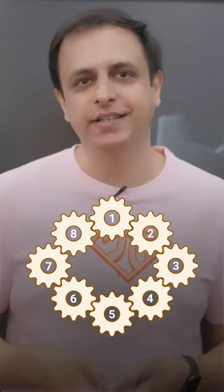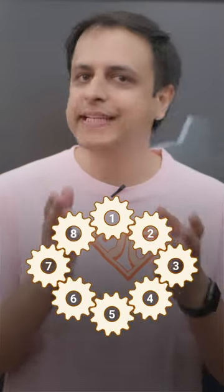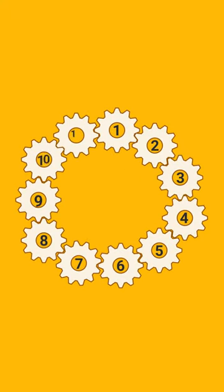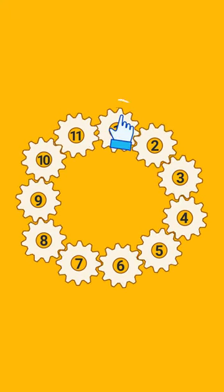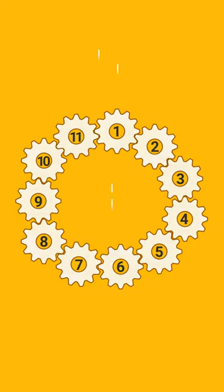Here's a system of eight gears linked to each other and this works perfectly. Will this system of 11 gears work as well? Look closely. It just doesn't move. Why is that?